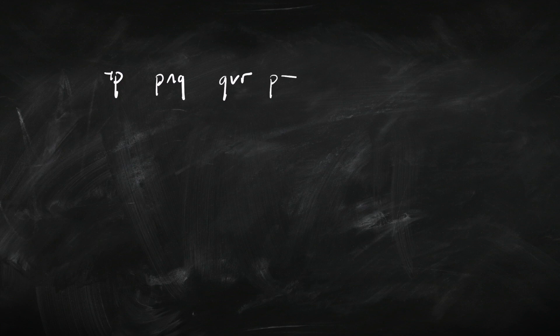Once we have our primitive sentences and connectives, we can start building more complex sentences. For instance: not-P, P and Q, Q or R, if P then Q, and Q if and only if R. Those are simple complex sentences — they have a connective binding together some sentences. But we can then take those sentences and combine them with another connective to make even more complex sentences.